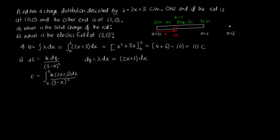This is a slightly tricky integral. We pull k out front, and expand (3 minus x) squared as 9 minus 6x plus x squared in the denominator. To simplify, we write the numerator as (2x minus 6) — which is the derivative of the denominator — plus 9. This splits the integral into a log-type term and a power-type term.